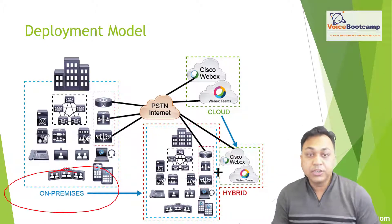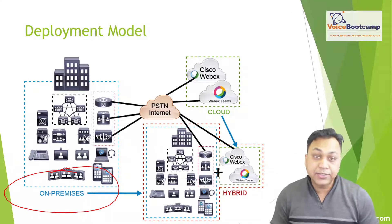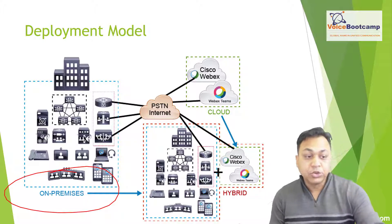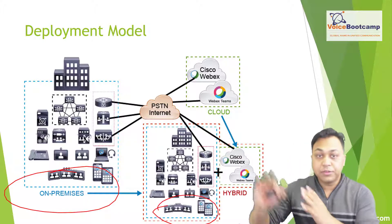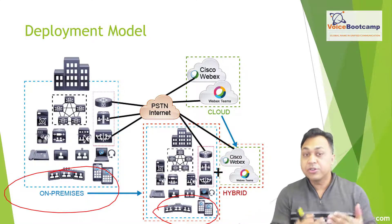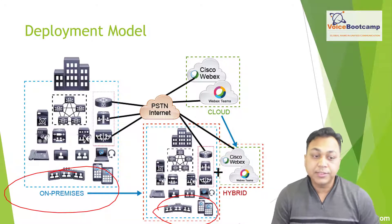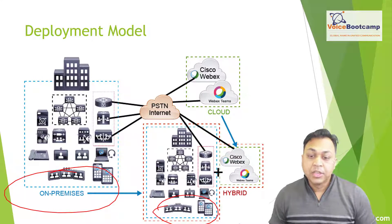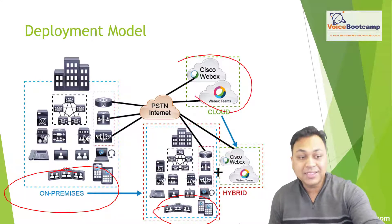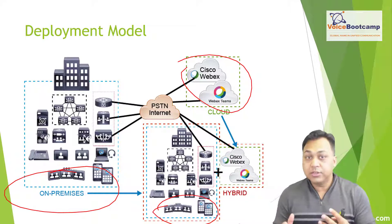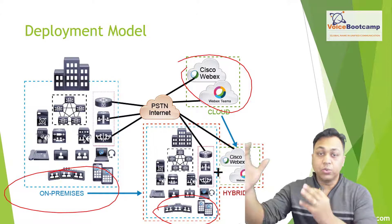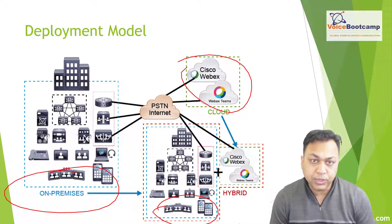We have on-premise, which is where everything is located in a single office or a single building. You could have another office in a different city or different location or countries and then interconnect them using some sort of high-speed connectivity. You could also connect to your WebEx cloud type of data center, connecting the on-premise infrastructure with cloud-based solutions as well.